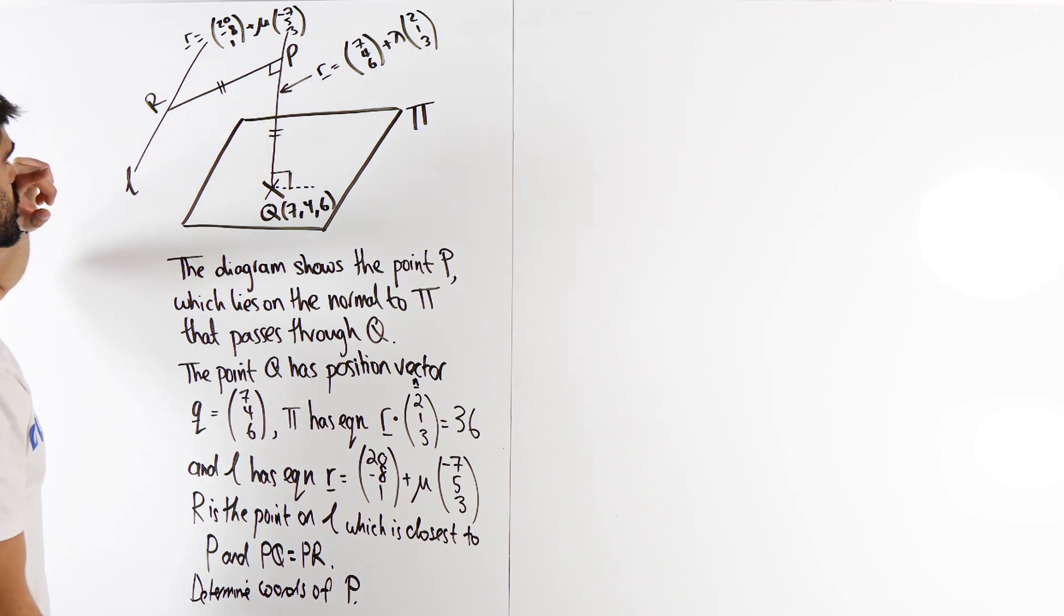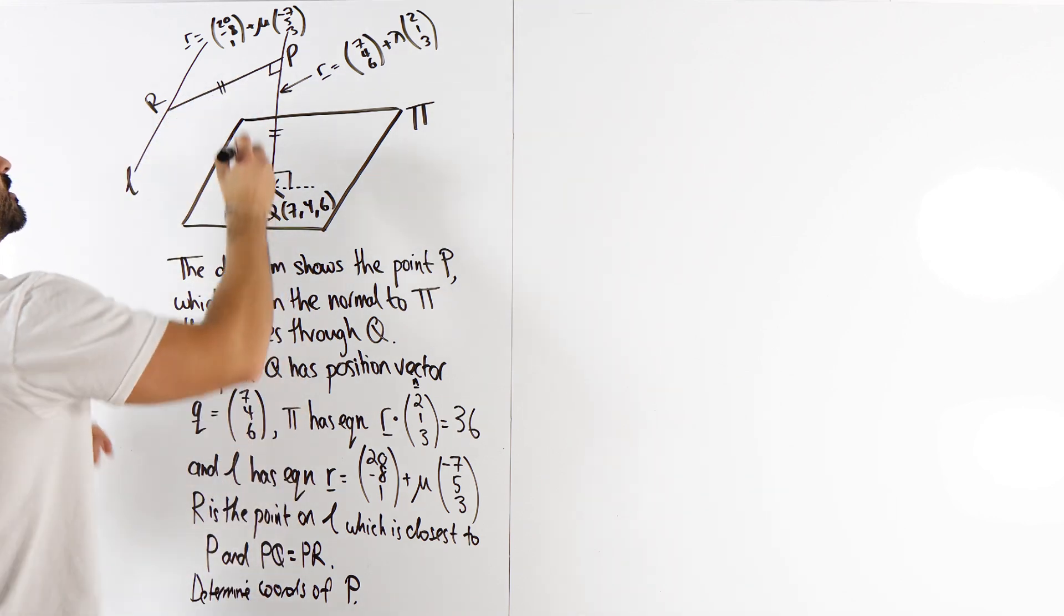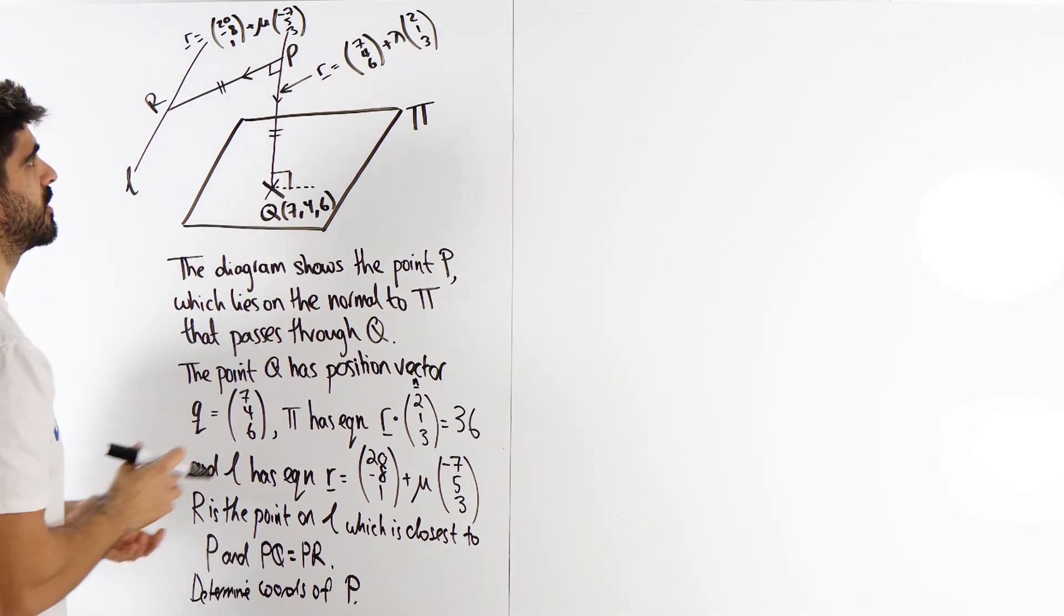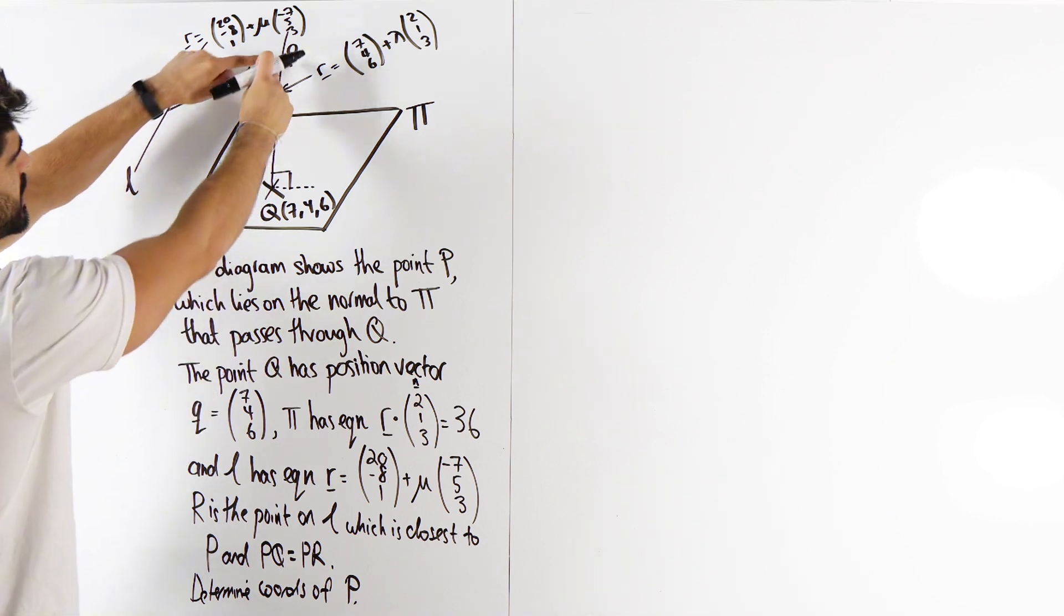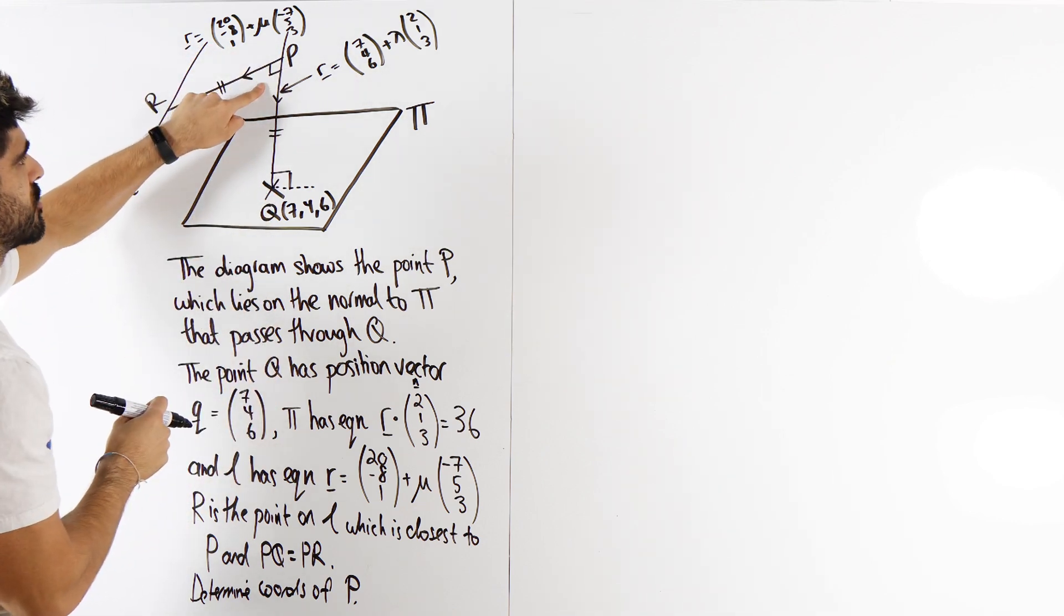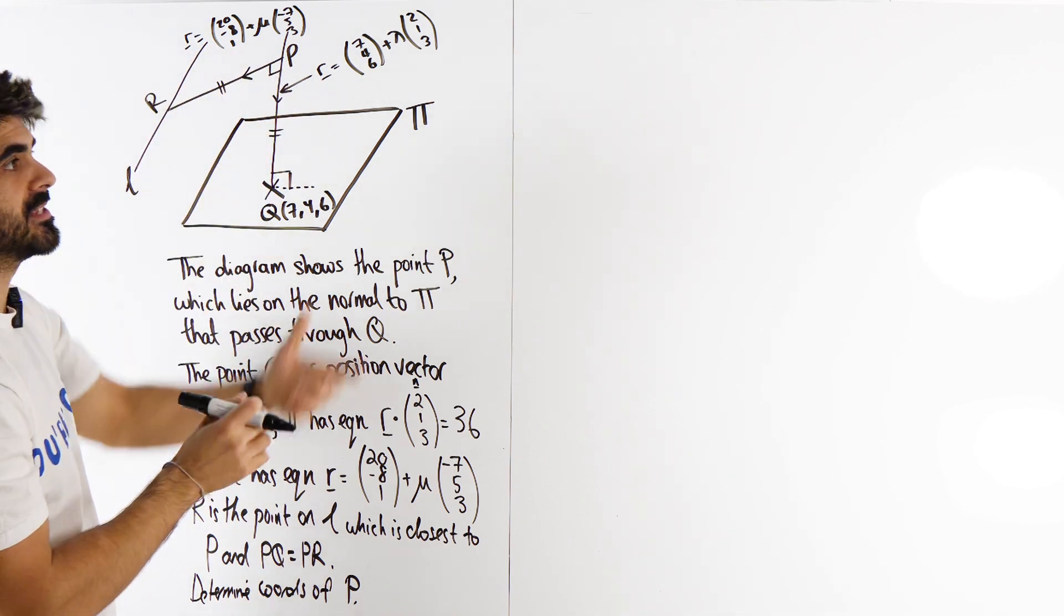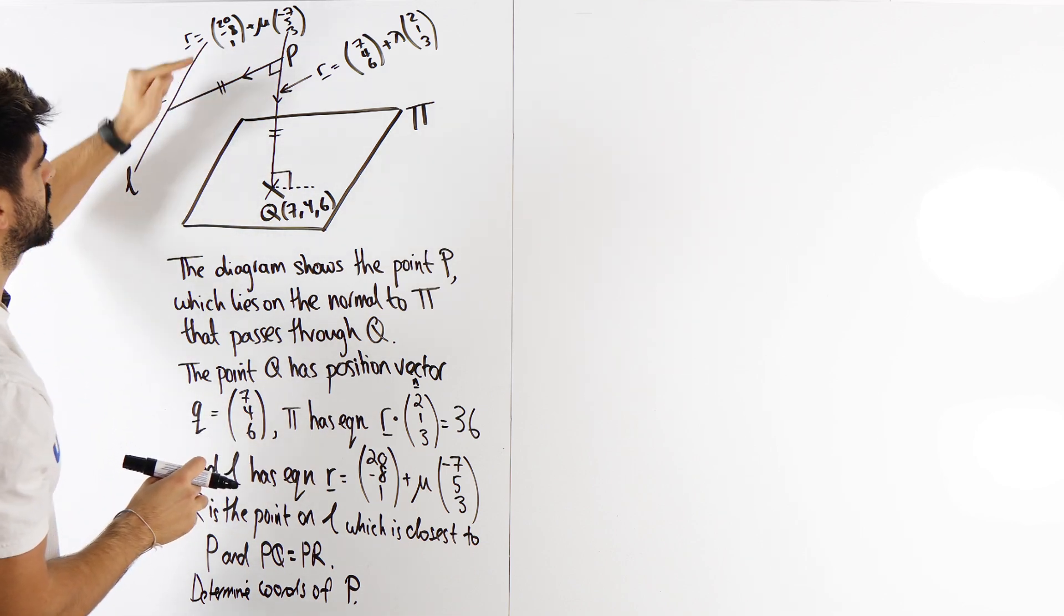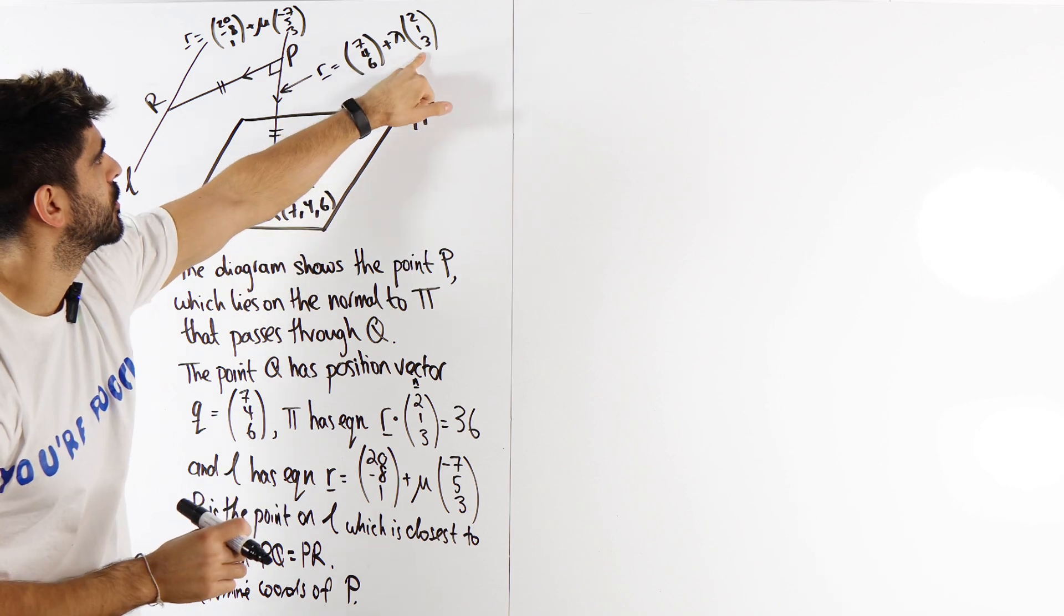So all we need to do is we need to find this direction. We're going to say these two directions here, we're going to work out what the value of P is. Those direction vectors make a 90 degree angle, meaning their dot product is zero. But we need to find out what that direction is, because we know this one, it is the normal.